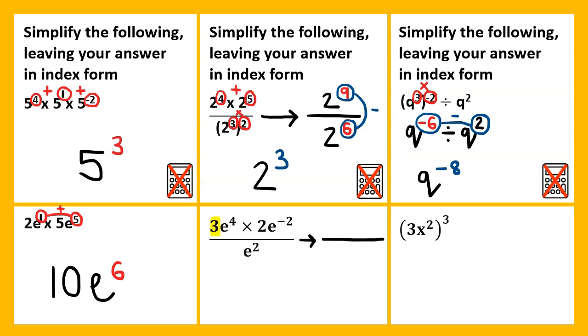Simplifying the top, 3 times 2 is 6. Our base is E, and 4 plus negative 2 is 4 take away 2, which is 2. Now simplifying, we have 6E, and then 2 take away 2 is 0. For those of you that don't know, E to the power of 0, or anything to the power of 0, is always 1. So this would be the same as 6 multiplied by 1, which is 6.